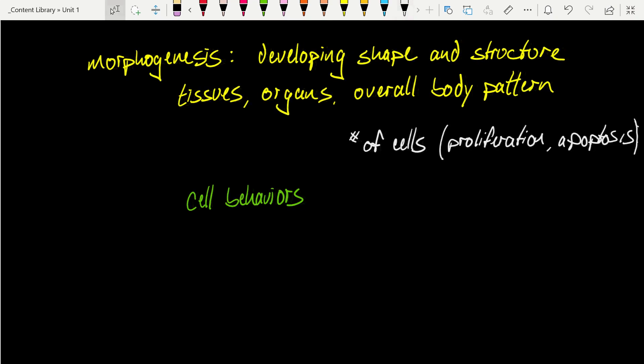Other important characteristics include cell shape, the size of the cell, what the cell is connected to, and what it has the ability to connect to. In other words, its adhesivity. And concurrent with adhesivity, we also need to think about location. These cell behaviors are fundamental to the process of morphogenesis, developing shape and structure of tissues, organs, and the overall body pattern.